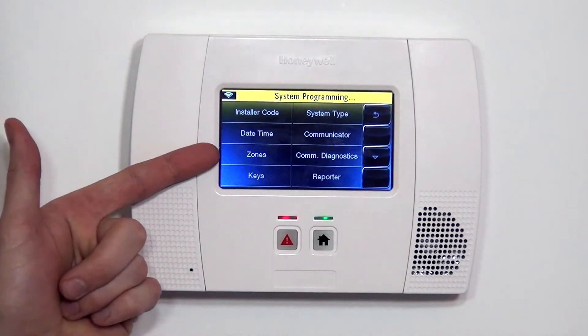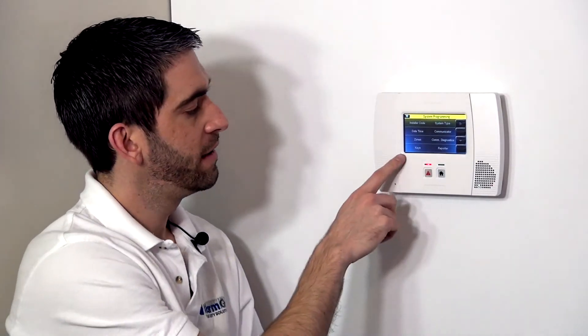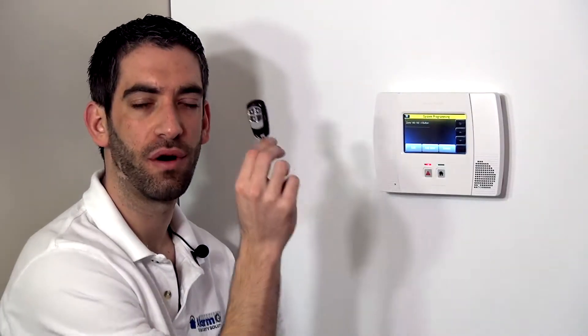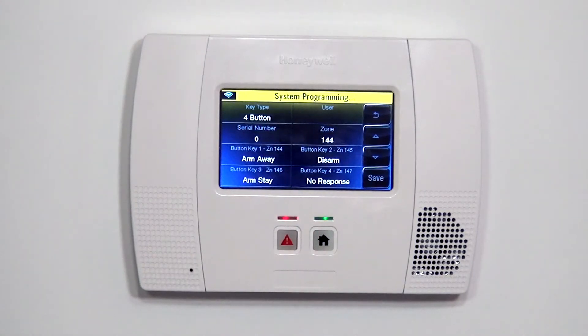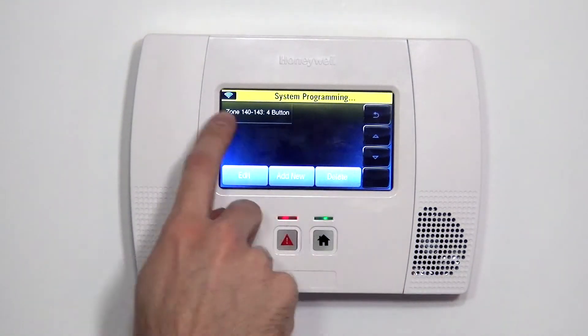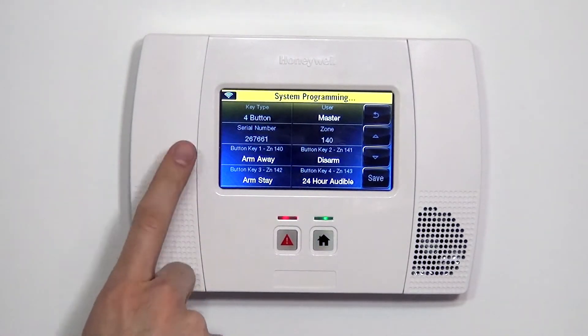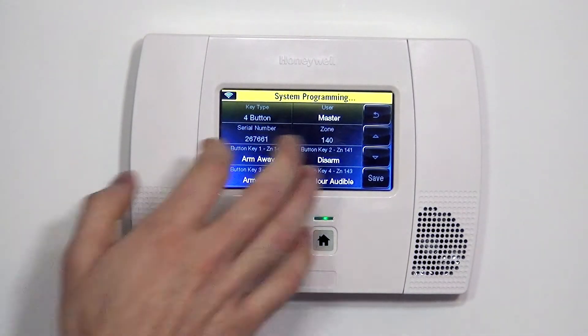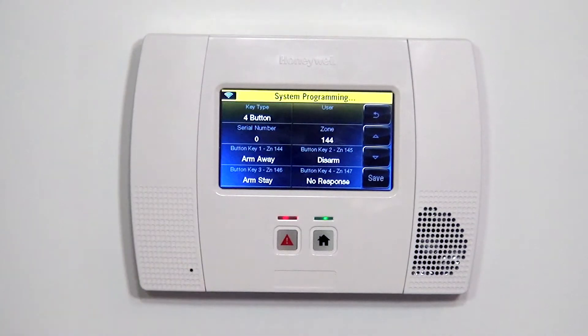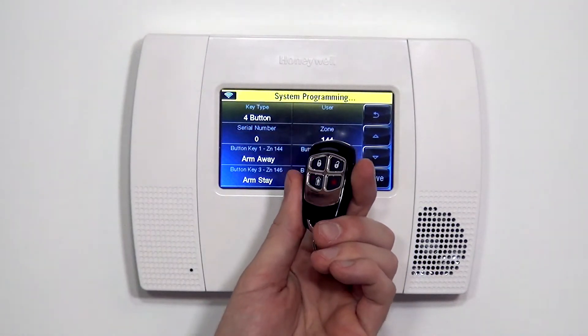This keys section of programming is a shortcut to program the fob, all four buttons together, all at once, much less likely to make a mistake when you do it this way. Add new allows us to put a new fob in. You'll notice we already have an existing fob, which is already set up. That's for our normal 5834-4, so add new allows us to program our second fob.